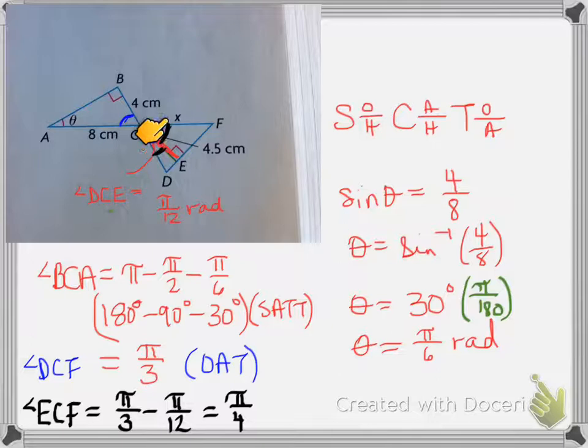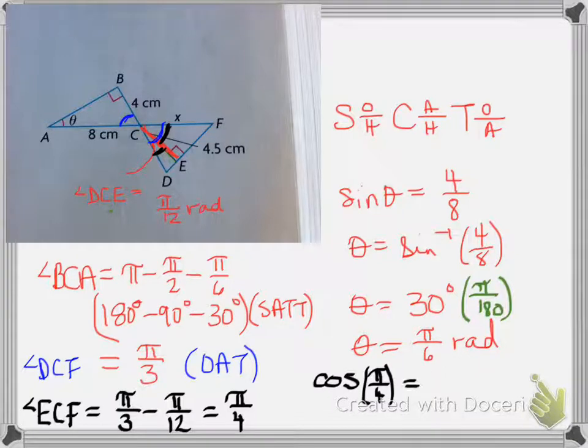So, this angle right here is going to be pi over 4. Knowing that, this is a right angle triangle, that means that this must be also pi over 4. Now, we have a right angle triangle. We have this measurement, which is the adjacent side. We also need this measurement, which is the hypotenuse. Using the adjacent and the hypotenuse, we use cosine. So, cosine of this angle, pi over 4, is equal to 4.5 over x.